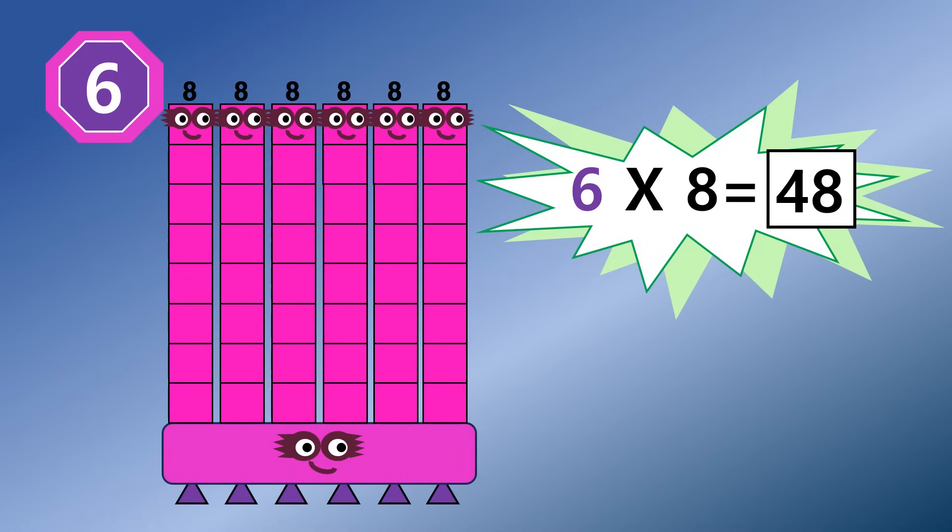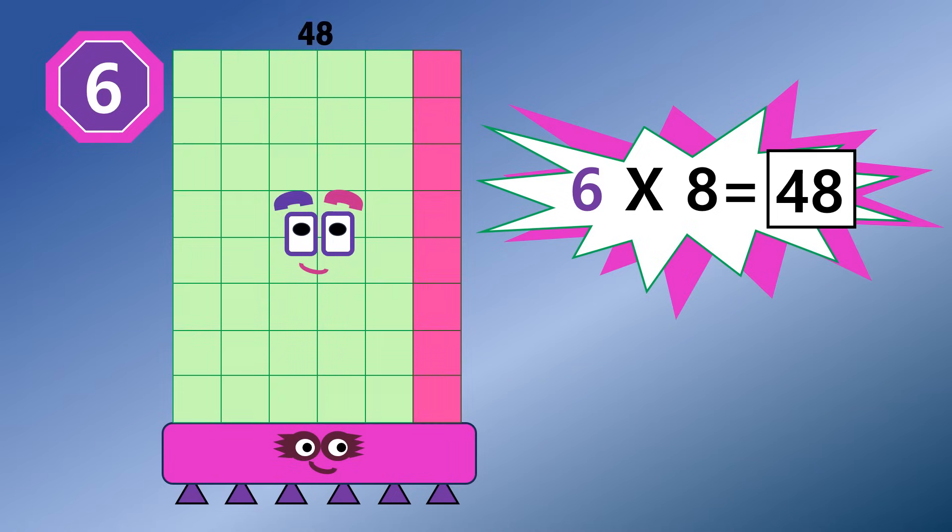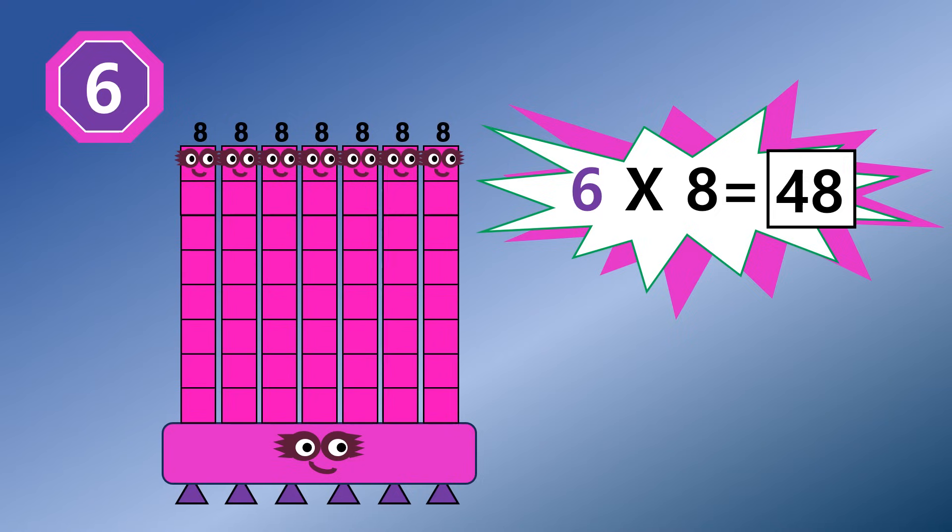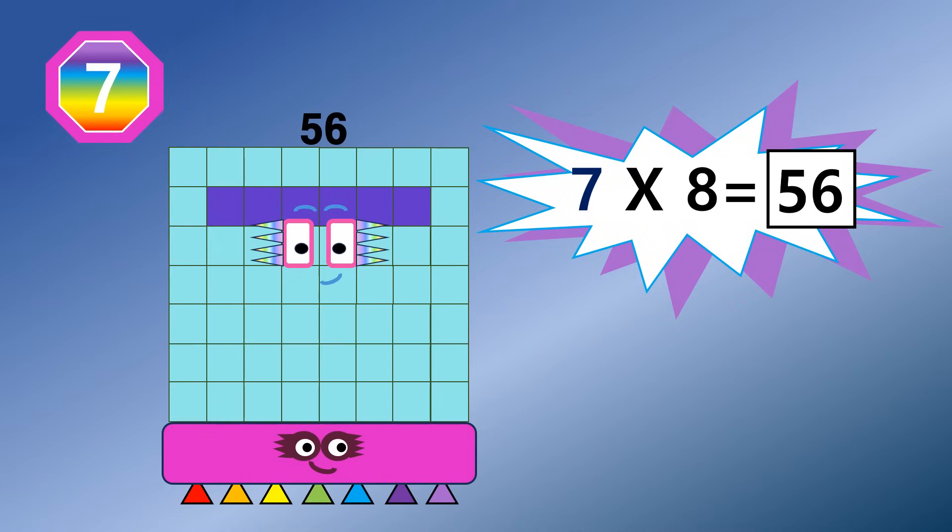Six 8 are 48. 48 is a Super Rescue Team. Seven 8 are 56. Rainbow 8s shoots out a colored beam.